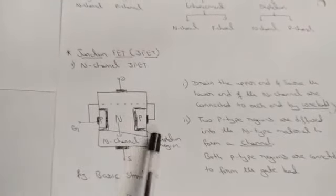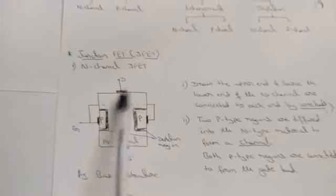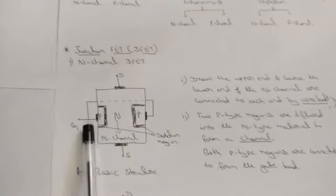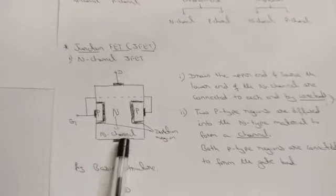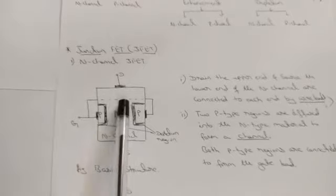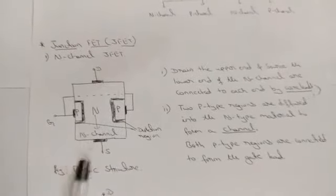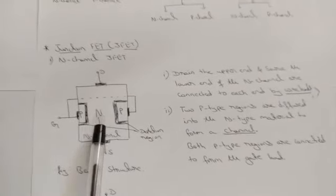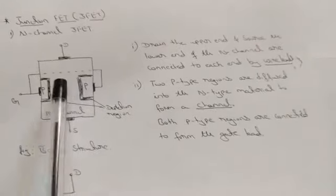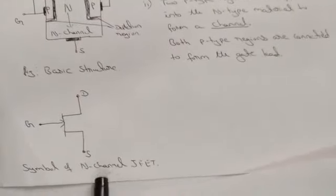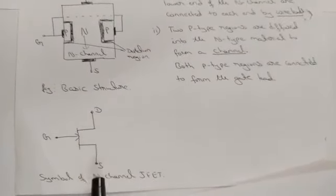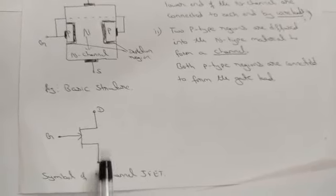The dark region formed is the depletion region, which can increase or decrease. When gate voltage or drain-to-source voltage is applied, the depletion region will enhance or decrease, affecting channel formation — making it higher or lower. The source is placed below and drain above in an N-channel. The two P-type diffused materials are joined by the gate, shown by dotted lines as the internal structure.